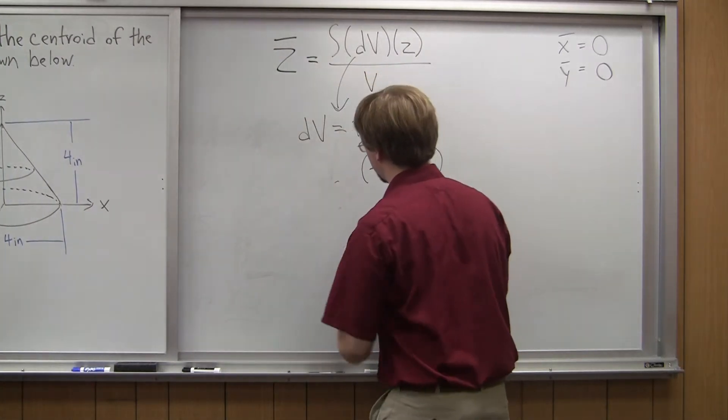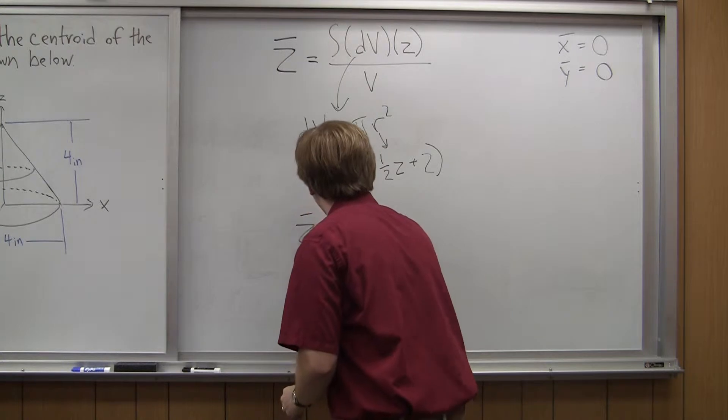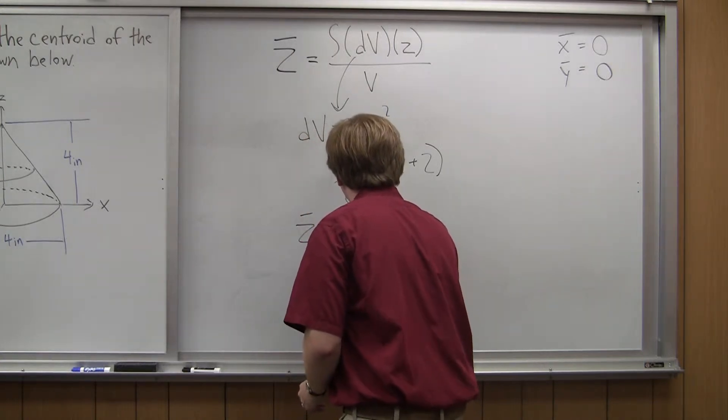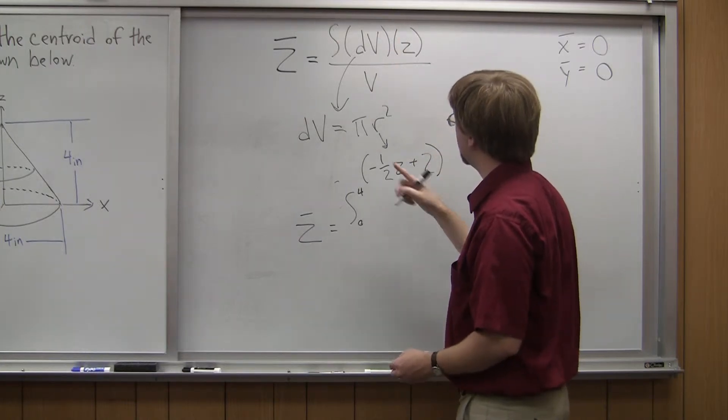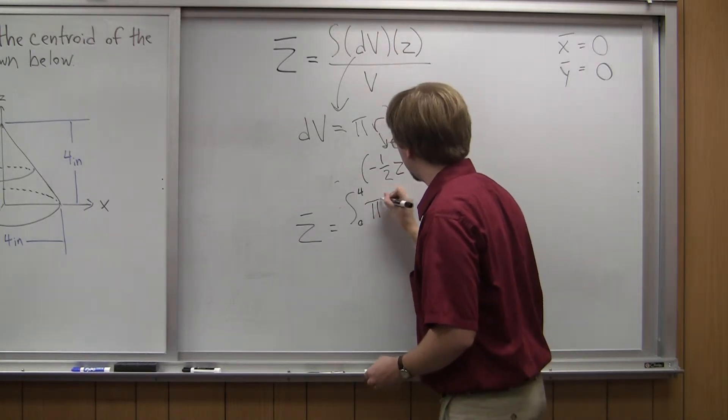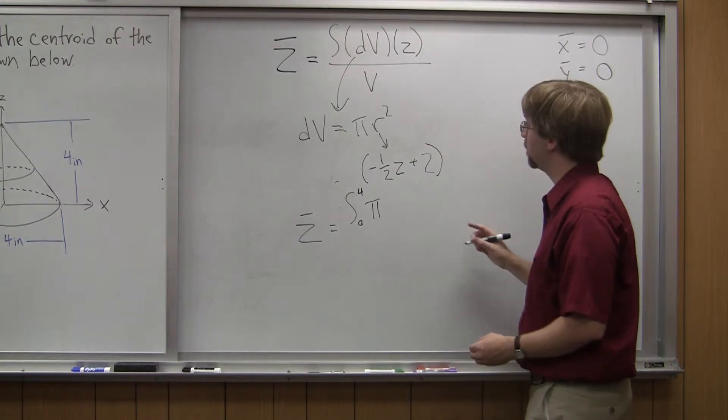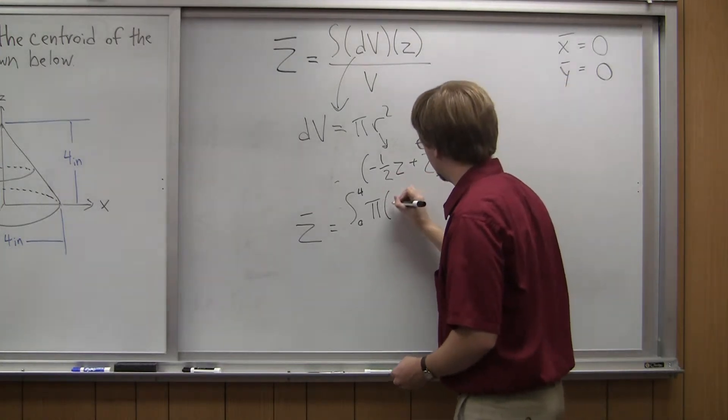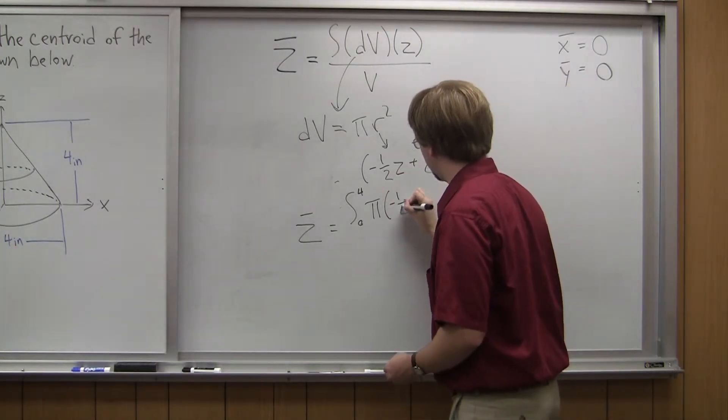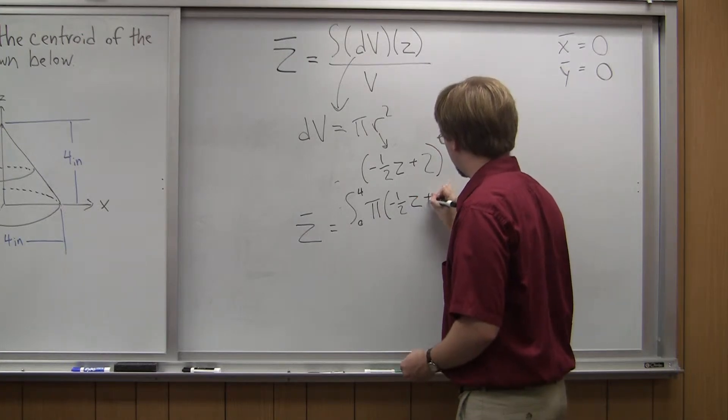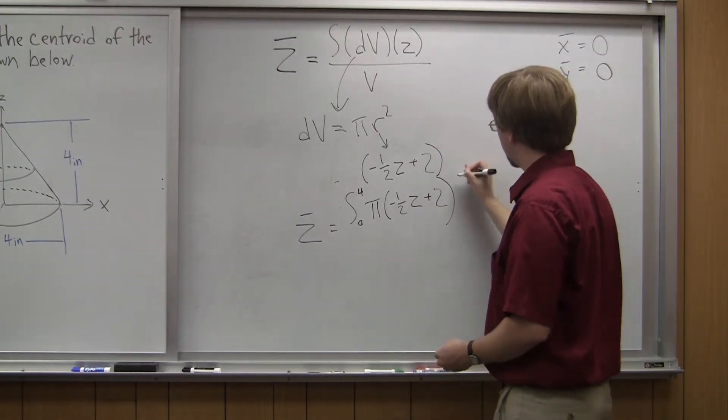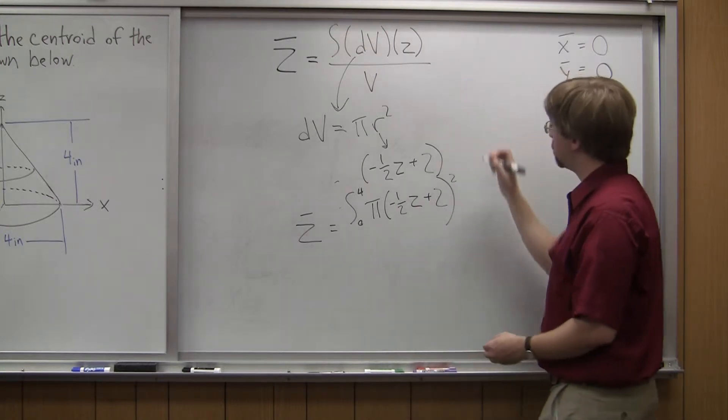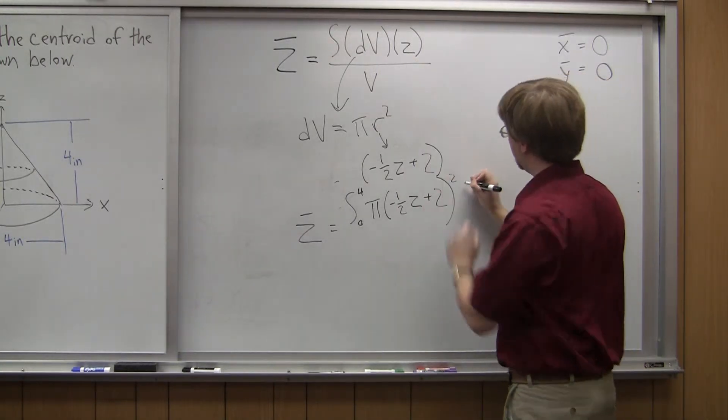Let me give myself a little more space here. z-bar equals the integral from z equals zero to z equals four of dv. And dv is going to be equal to pi times r squared. r is this right here. So negative one-half times z plus two. And that whole thing is squared. And I multiply this by z, which comes from up there.